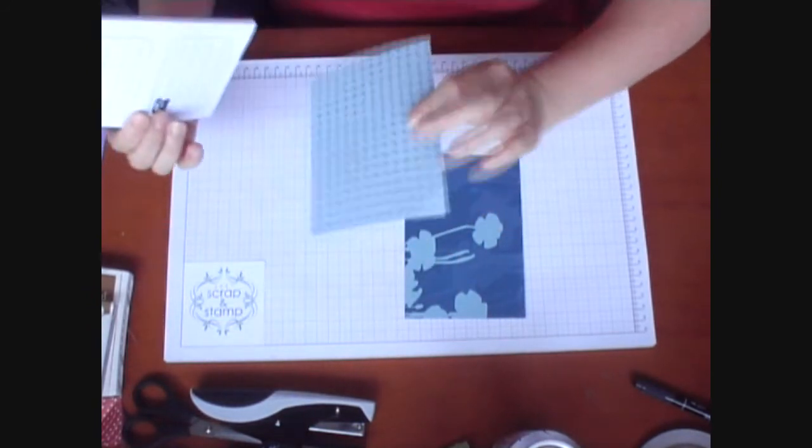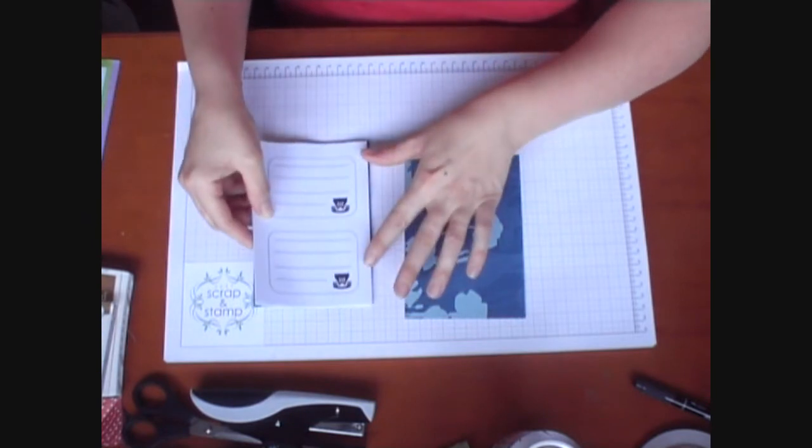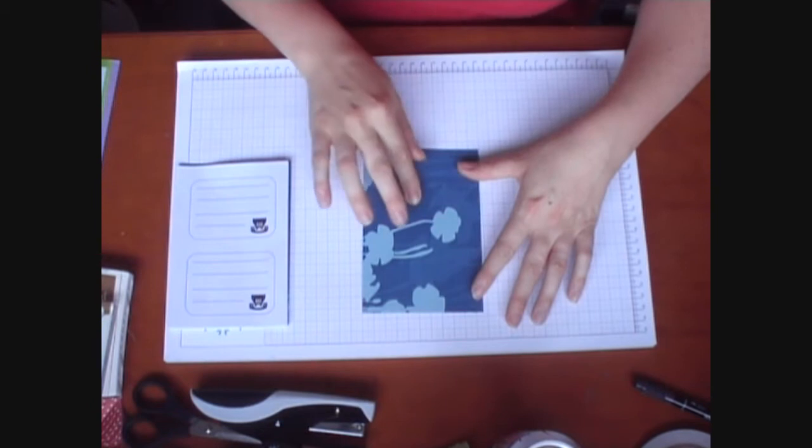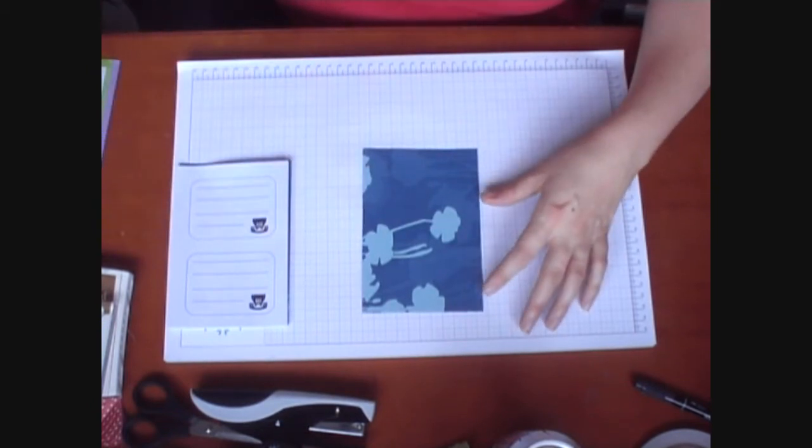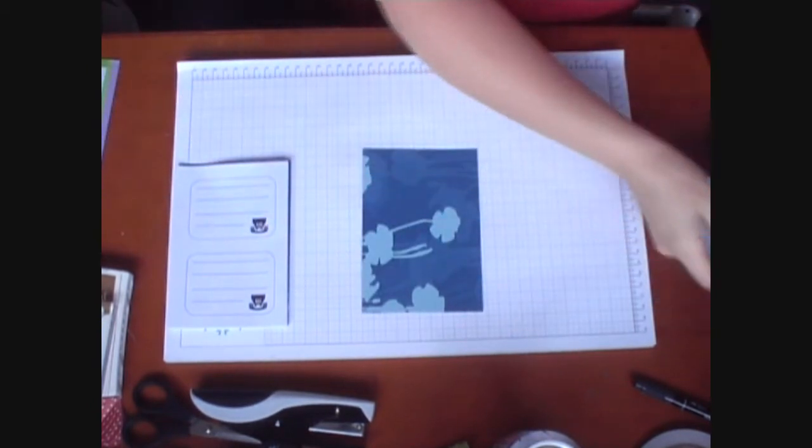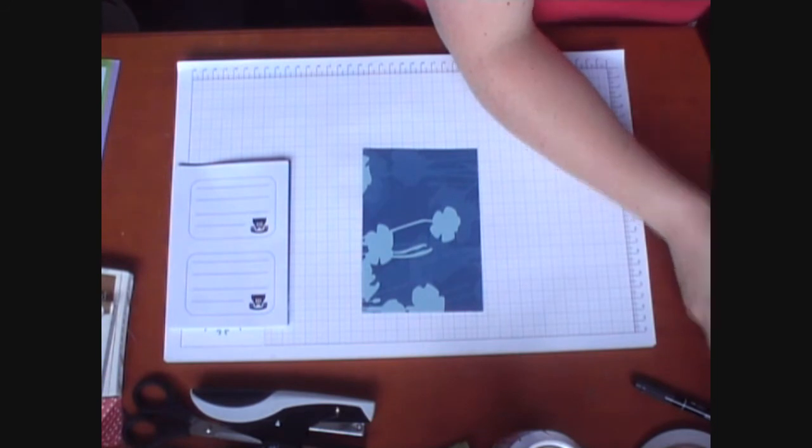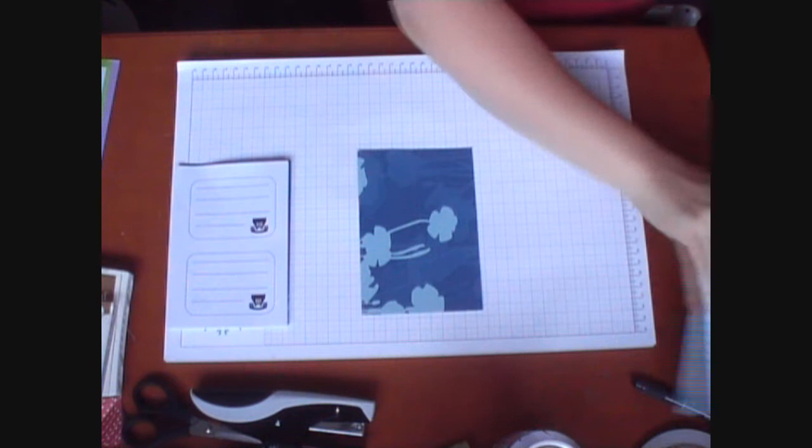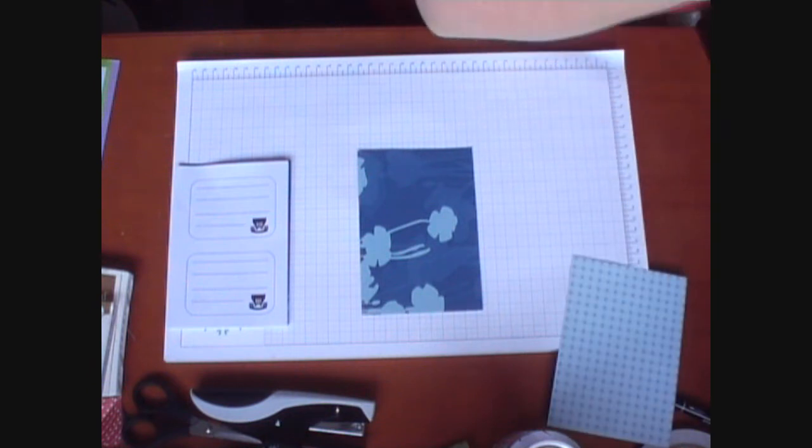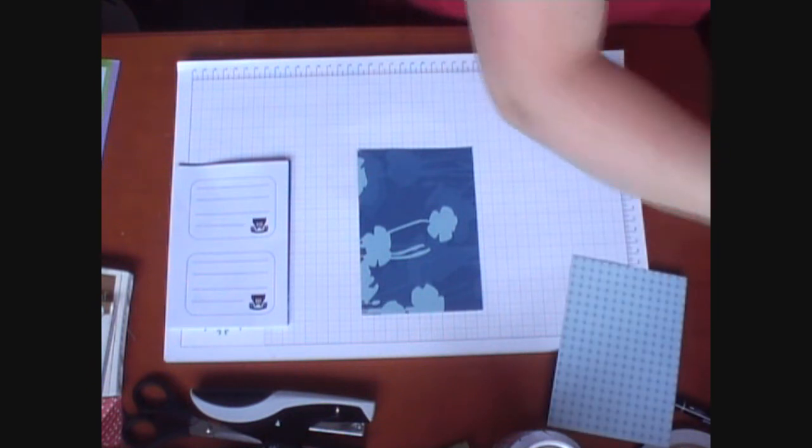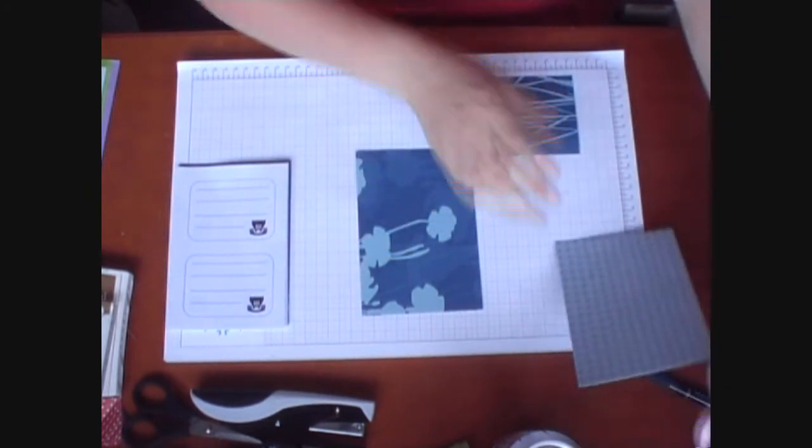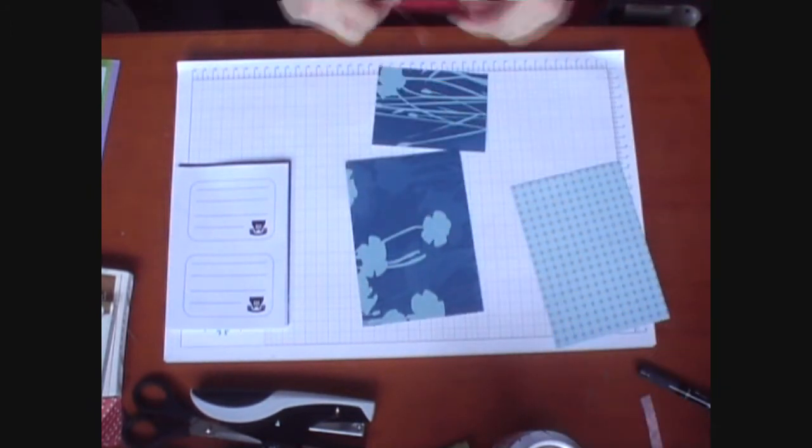So we're just going to pop the patterned paper and then our phone pages. Now on the inside cover of the front page I want a little pocket. So I'm just going to cut another piece of patterned paper to make a pocket, just the same width as our paper but about half the size to pop on there. So we'll just pop some double sided tape along three edges.